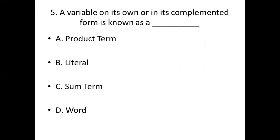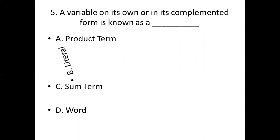Fifth bit. A variable on its own or in its complemented form is known as dash. Option A: product term. Option B: literal. Option C: sum term. Option D: word. Answer: Option B, literal.